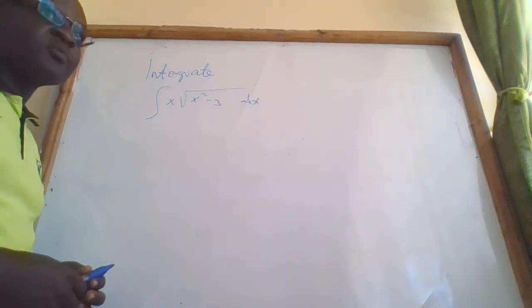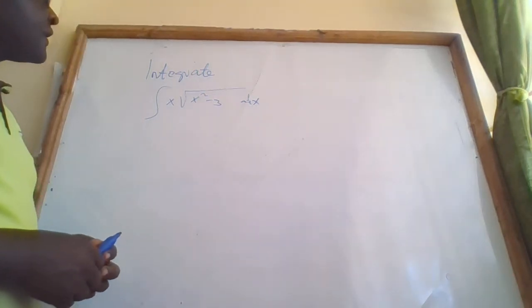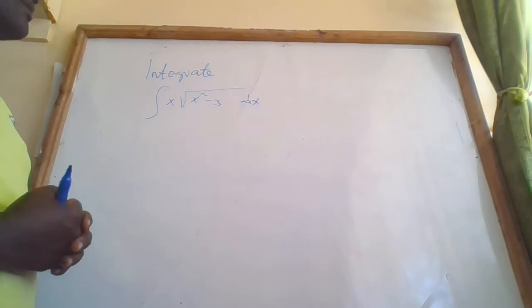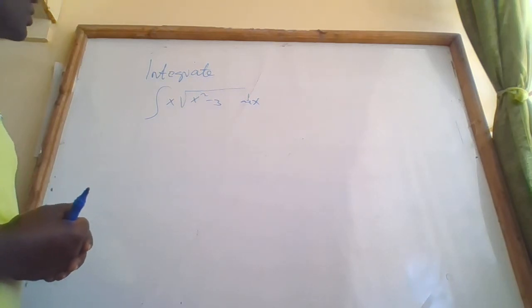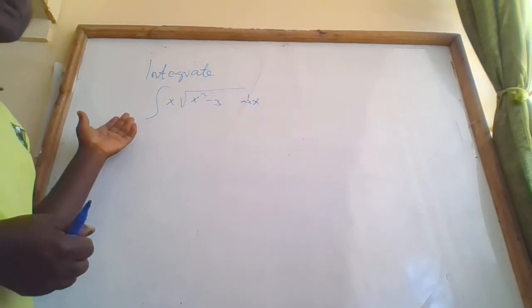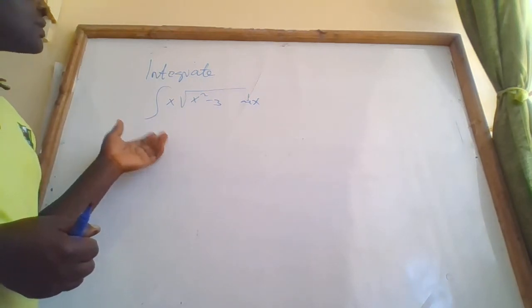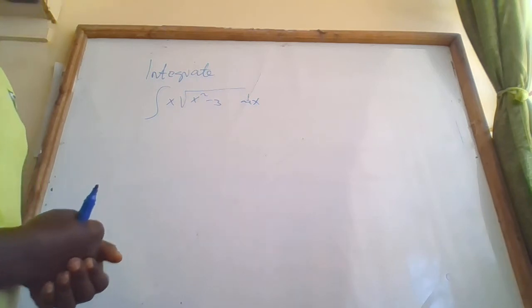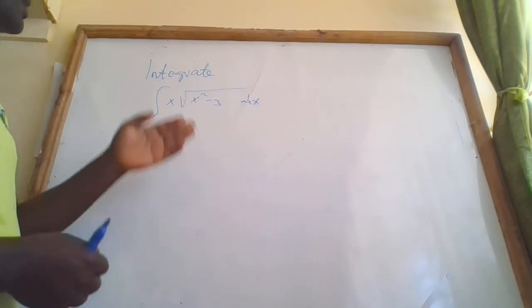We've been given this problem. They want us to perform integration — they want us to integrate x times the square root of x squared minus 3, dx.